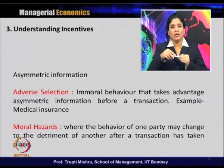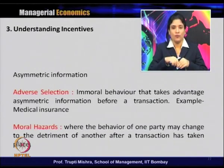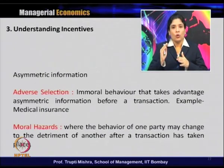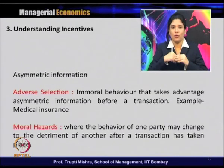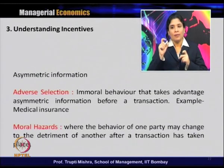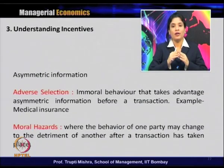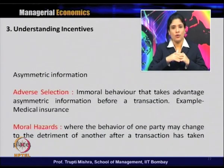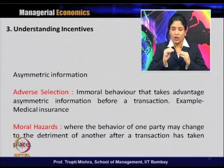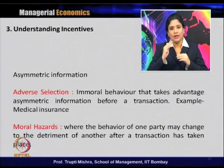There is a conflict of interest because the principal does not have much information to do this activity on their own. The agent has the information, and since they have the information, they want to maximize some benefit from it compared to the principal. The major reason for the principal-agent problem is asymmetric information, and it leads to two problems: one is adverse selection, and second is moral hazards.